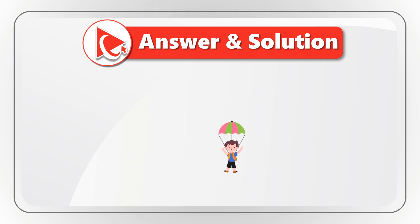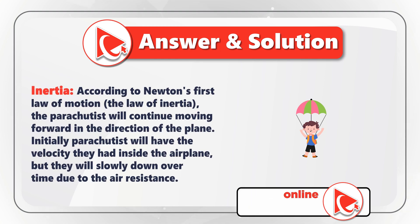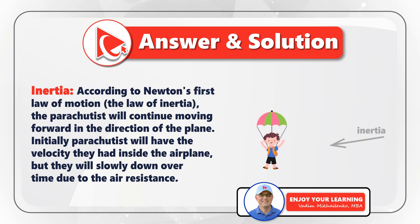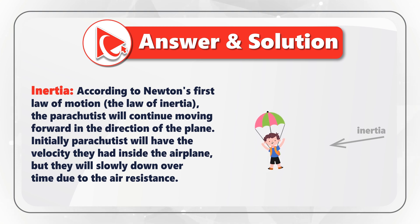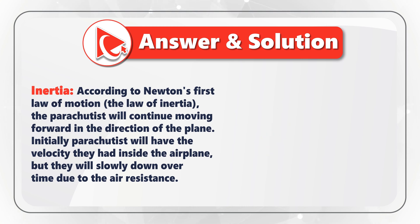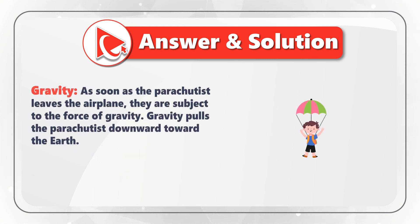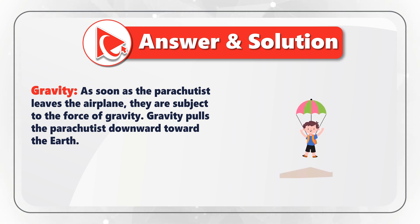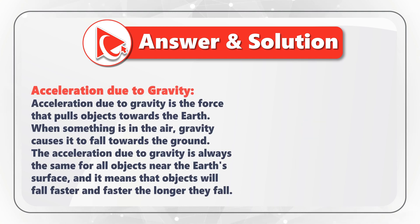When the parachutist jumps from the plane, there are multiple forces that will determine the trajectory. Number one is inertia. According to Newton's first law of motion — the law of inertia — the parachutist will continue moving forward in the direction of the plane. Initially, the parachutist will have the velocity they had inside the plane, but they will slow down over time due to air resistance. Another key force is gravity.